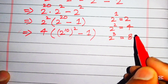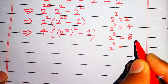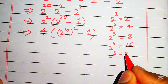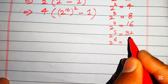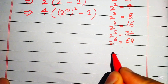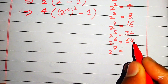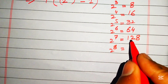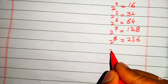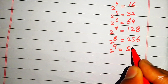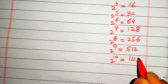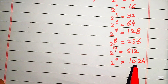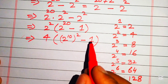So: 2 is 2, 2 times 2 is 4, 4 times 2 is 8, 8 times 2 is 16 for 2 to the power of 4, times 2 is 32 for the 5th power, times 2 is 64 for the 6th, times 2 is 128 for the 7th, times 2 is 256 for the 8th, times 2 is 512 for the 9th, and 2 to the power of 10 equals 1024.